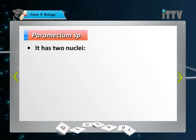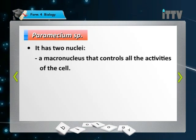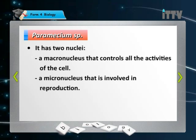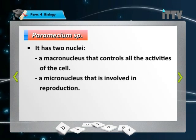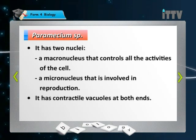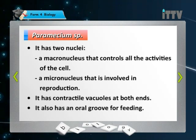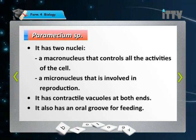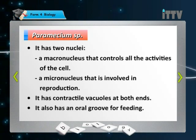It has two nuclei: a macronucleus, which controls all activities of the cell, and a micronucleus, which is involved only in reproduction. It has a contractile vacuole at both ends, and it also has an oral groove for feeding.